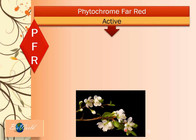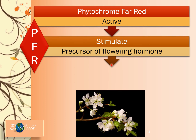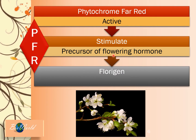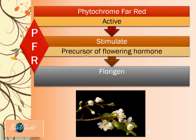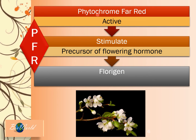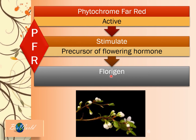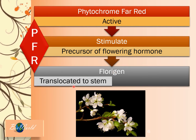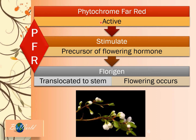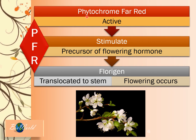Phytochrome far-red, which is the active form, is directly responsible for the flowering process. Phytochrome far-red will actually stimulate the precursor of a flowering hormone. This flowering hormone is not ethylene but florigen. To make florigen, there are basic chemicals called the precursor present in the plant. But these precursors do not become florigen unless phytochrome far-red is formed. So phytochrome far-red will mix the precursor together to form florigen. Then this florigen hormone will be translocated to the stem of the plant and flowering will occur.